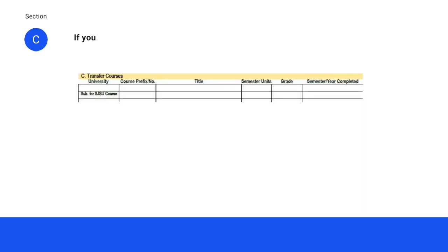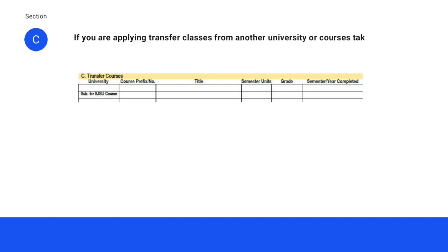If you are applying transfer classes from another university or courses taken through iSchool open classes, list these in Section C. You may only list a combined total of 9 units in this section.